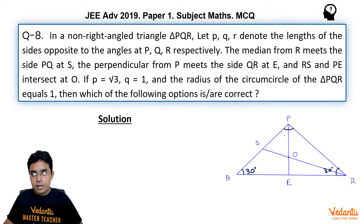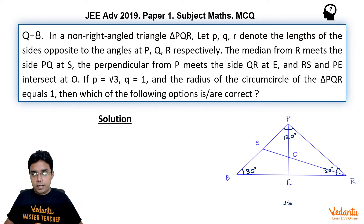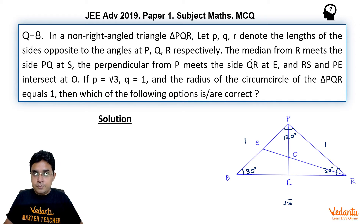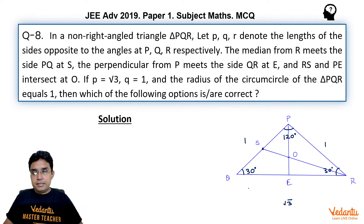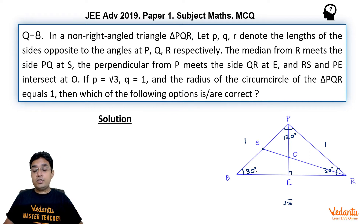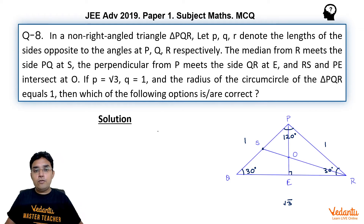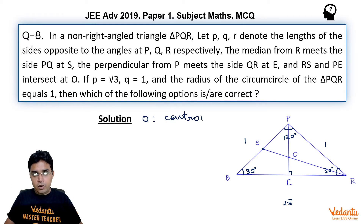The triangle has angle P = 120°, angles Q = R = 30°, with side p = √3 opposite P, and sides q = r = 1. The median from R meets PQ at S (its midpoint), and the perpendicular from P meets QR at E. Because the triangle is isosceles, PE is also a median, so O — the intersection of RS and PE — is actually the centroid of triangle PQR.